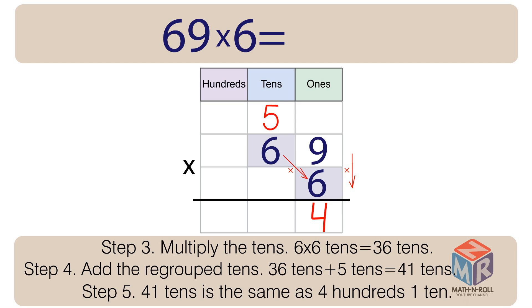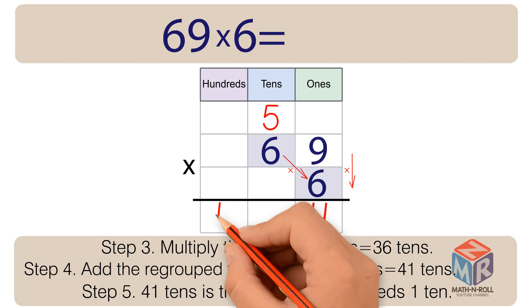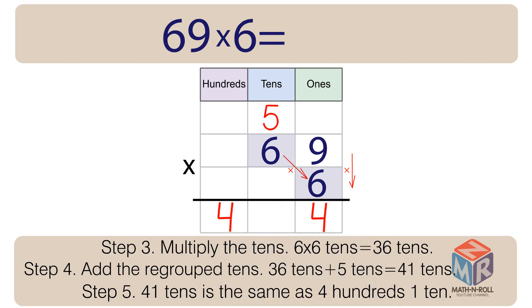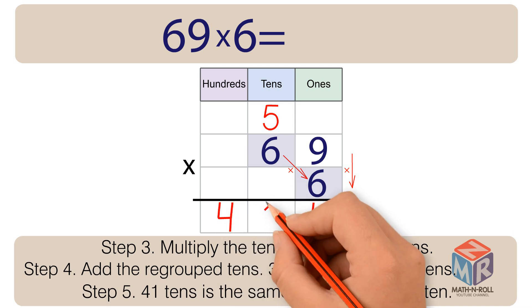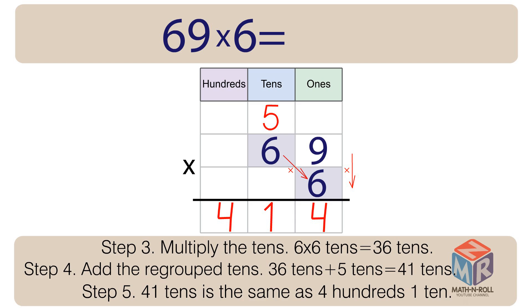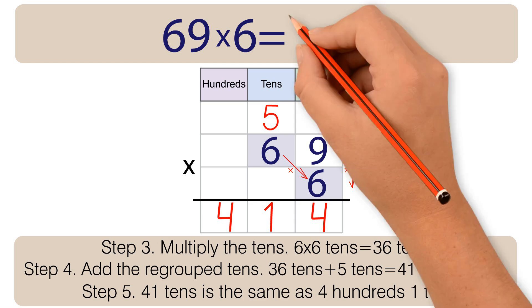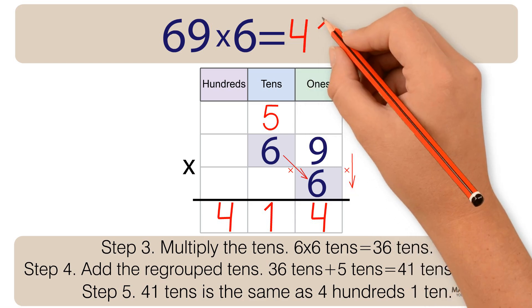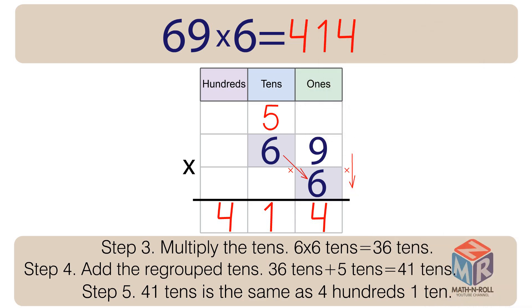Step 5: 41 tens is the same as 4 hundreds and 1 ten. So 69 times 6 is equal to 414.